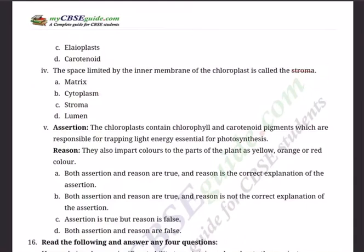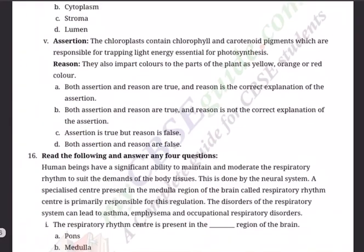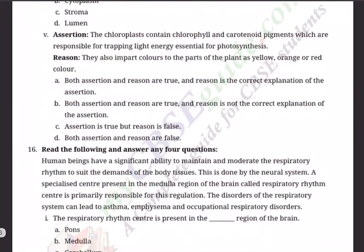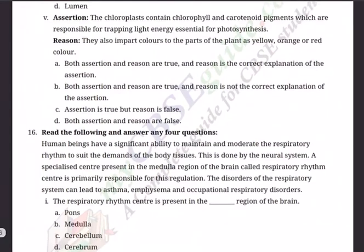Q15 Sub-question 5 — Assertion: Chloroplasts contain chlorophyll and carotenoid pigments which are responsible for trapping light energy essential for photosynthesis. Reason: They also impart colors to the parts of the plant as yellow, orange, or red colors. Options: (A) Both assertion and reason are true and reason is correct explanation; (B) Both are true but reason is not correct explanation; (C) A is true but R is false; (D) Both A and R are false.